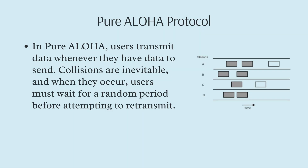In Pure Aloha, users transmit data whenever they have data to send, without any coordination. This lack of synchronization leads to inevitable collisions, especially in networks with high traffic. When a collision occurs, users must wait for a random period before attempting to retransmit. The efficiency of Pure Aloha is relatively low due to these frequent collisions — its maximum channel utilization is around 18%. This means only about 18% of the time is used for successful transmissions, while the rest is lost due to collisions and retransmissions. Despite its simplicity, this method highlighted the potential and challenges of wireless communication.